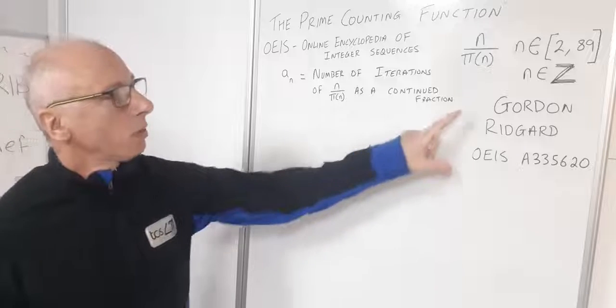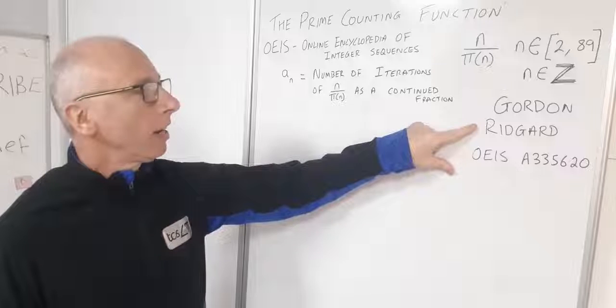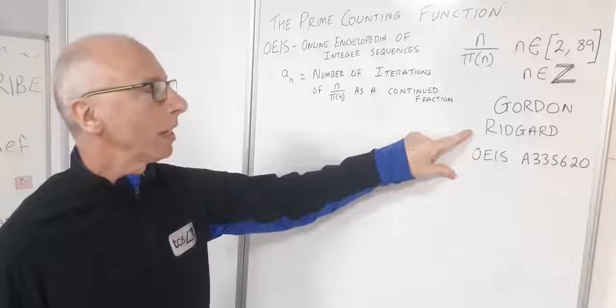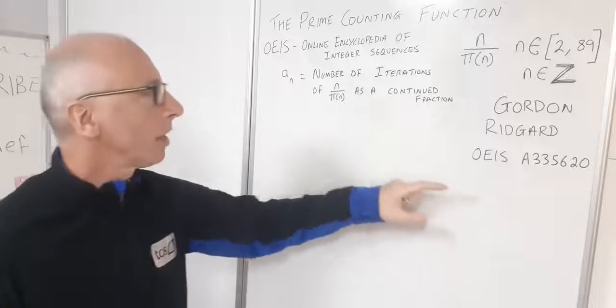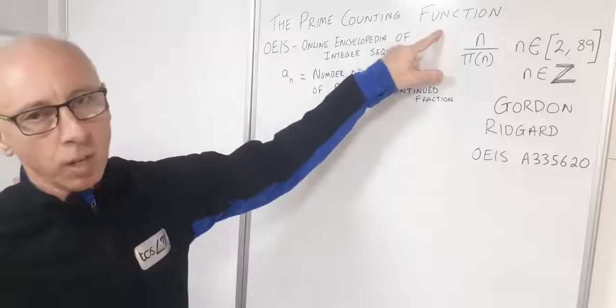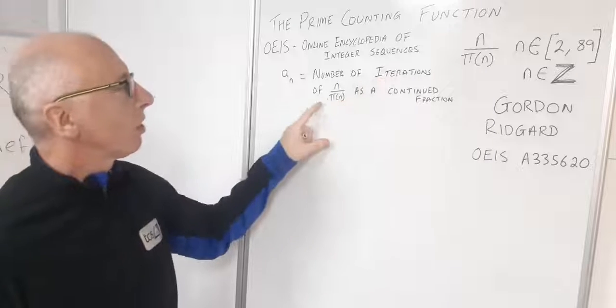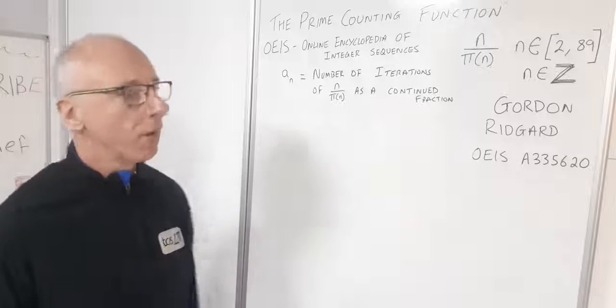There's one sequence here which was submitted by Gordon Riggaard, a fantastic mathematician that I know. This sequence here I found particularly interesting because it's n over π(n), which is related to our prime counting function. It's the number of iterations of n over π(n) as a continued fraction.